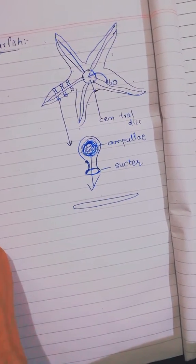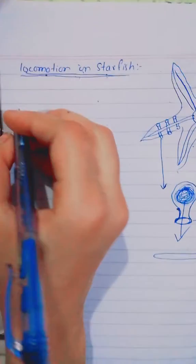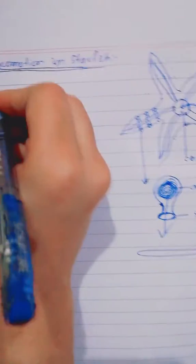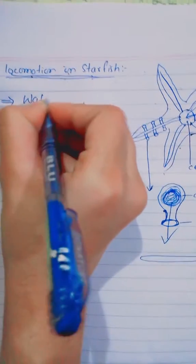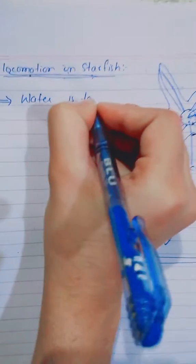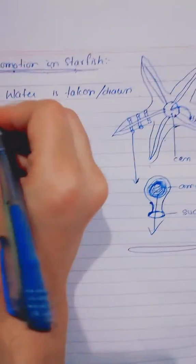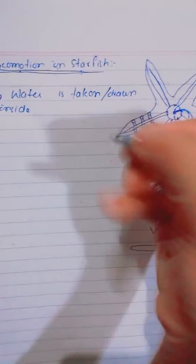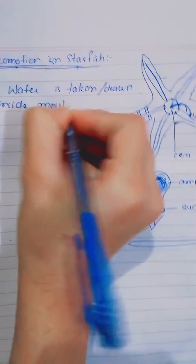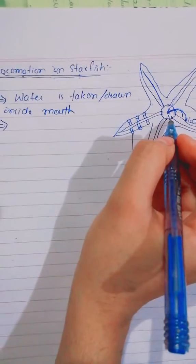So we are noting out points. First point is that water is taken or drawn inside by the central disc. This is its mouth. Then it goes into the radial canals, then into ampule, and then to sucker. This is all water vascular system.